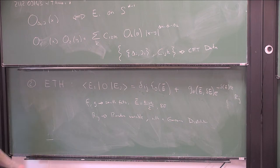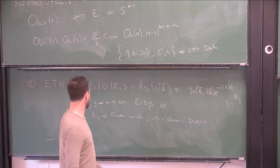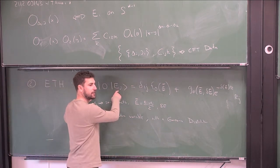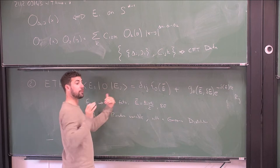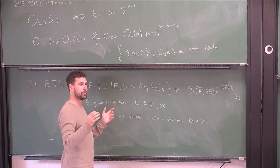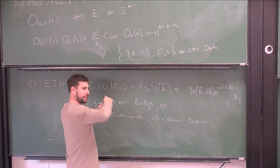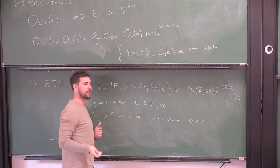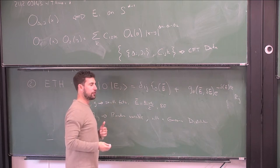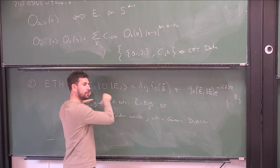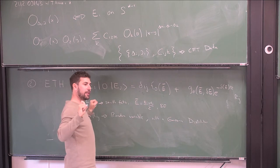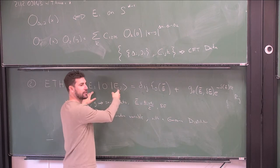ETH is meant to hold for states that have an extensive amount of energy — in the thermodynamic limit, states that have a finite energy density. In the case of the many-body system called SYK, you can actually use techniques from coadjoint orbit quantization to prove parts of ETH, so there are some many-body theories where there is an analytic approach. SYK is something of a miracle in that it's both chaotic and solvable, so you can actually start probing these things.